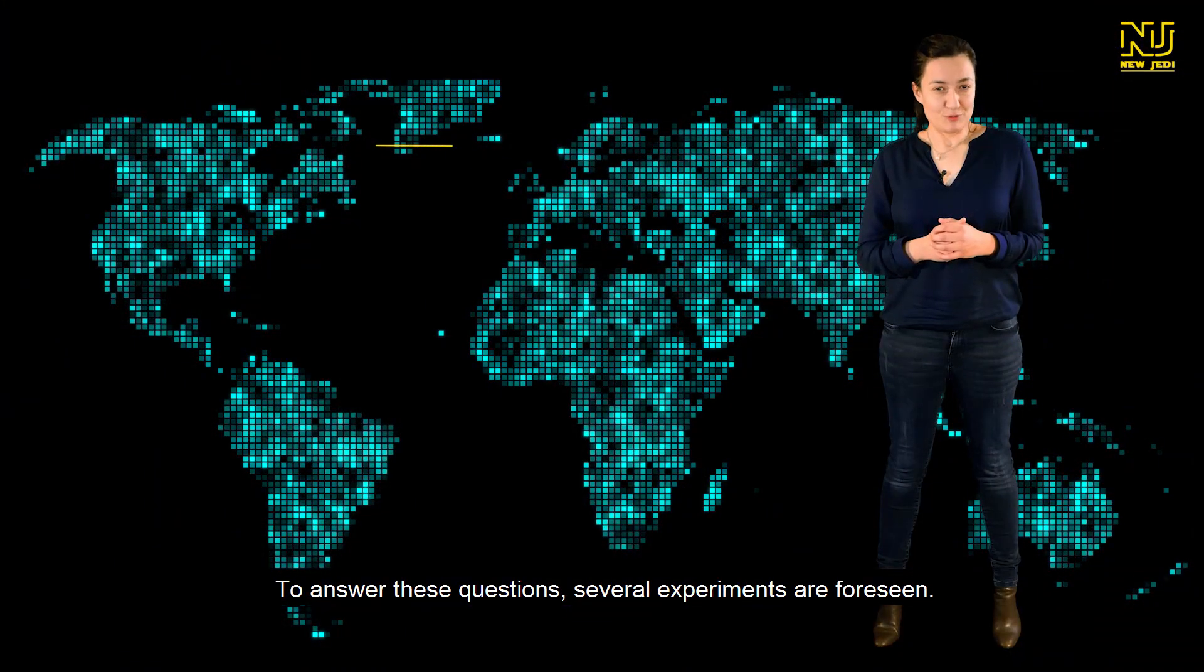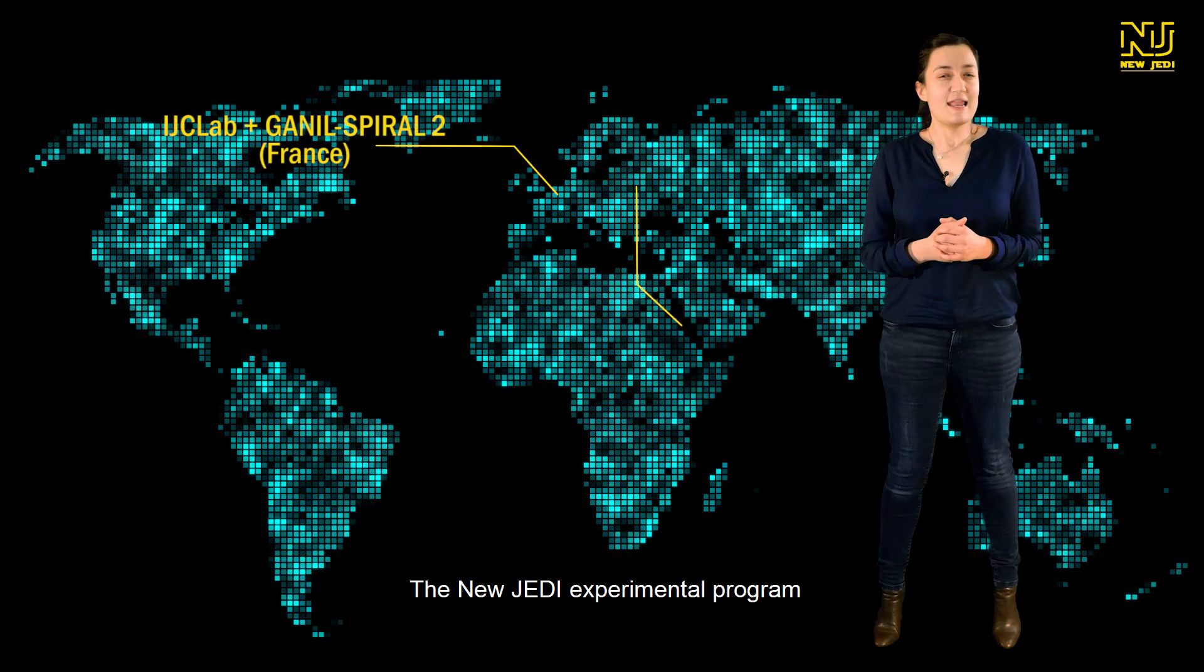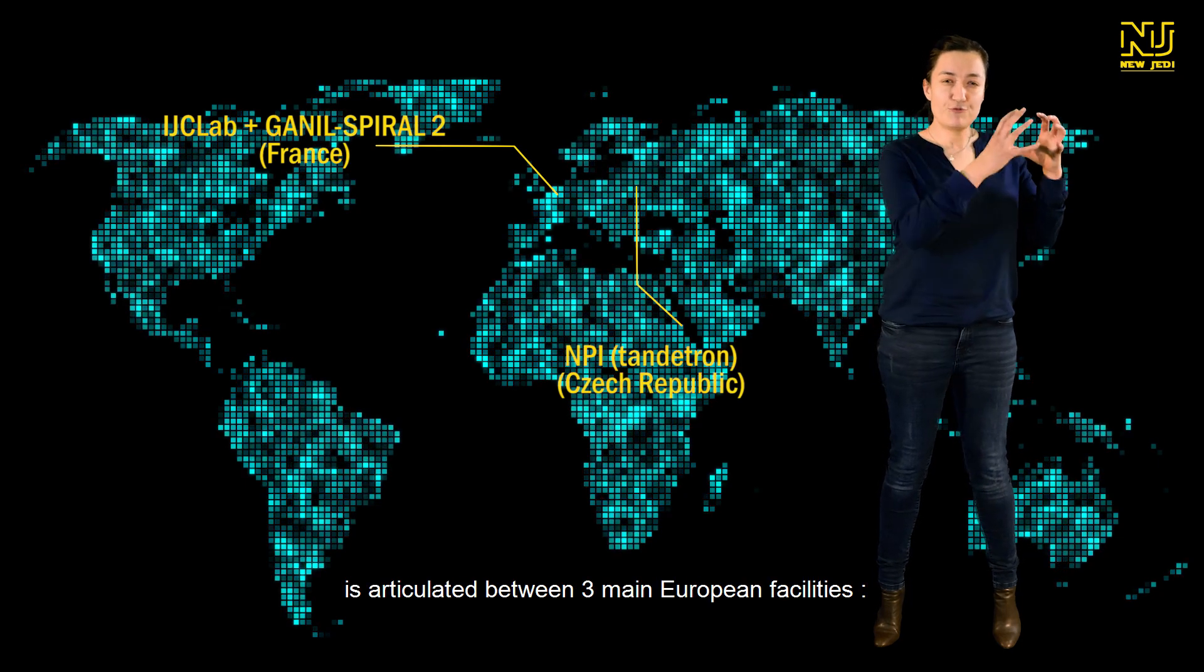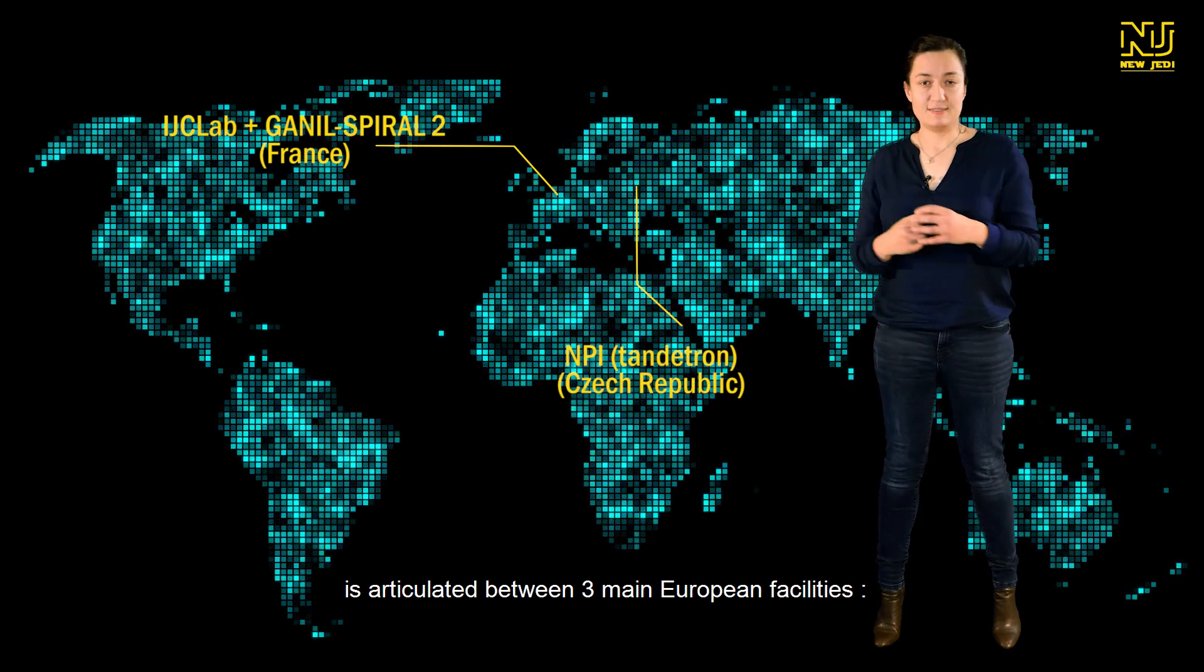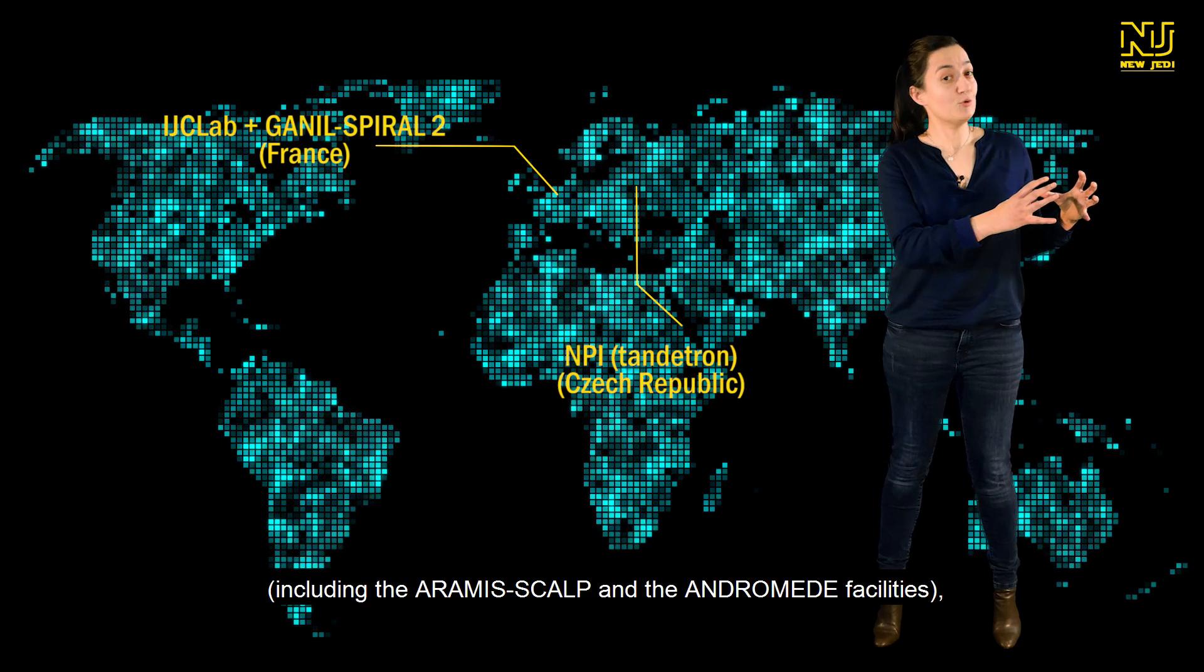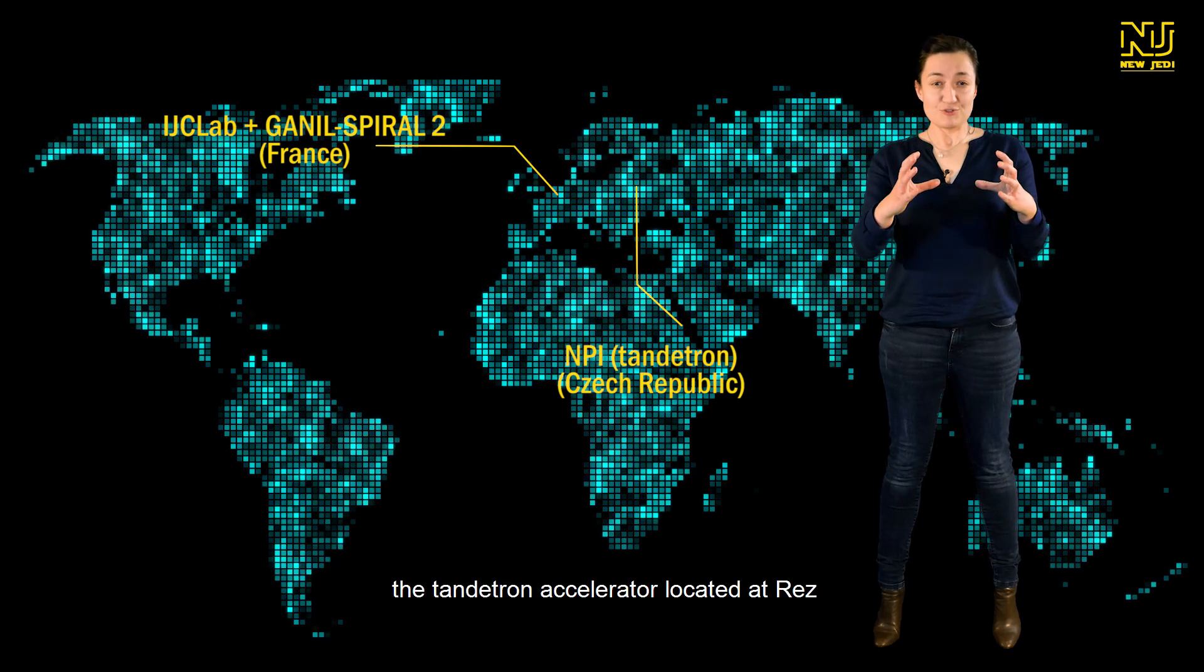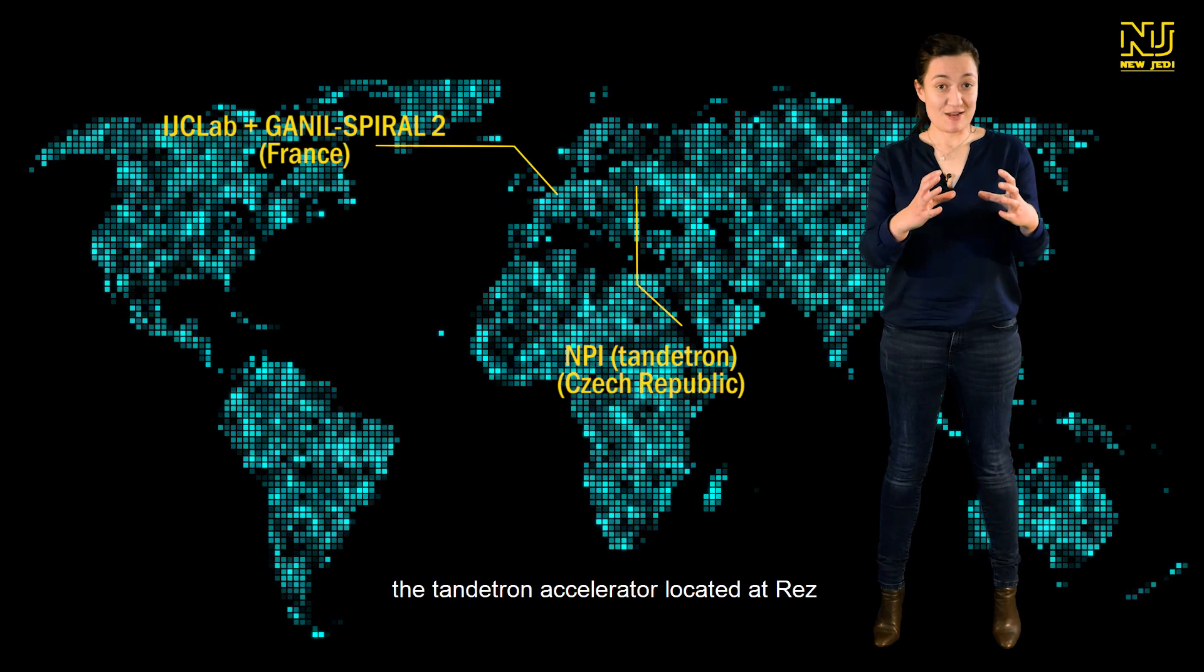To answer these questions, several experiments are foreseen. The New JEDI experimental program is articulated between three main European facilities: The IJCLab experimental platform, including the ARAMIS and the Andromede facilities. The Tandetron accelerator located at RESS.